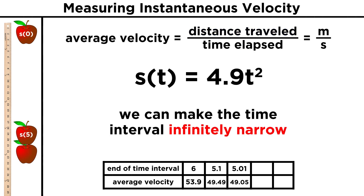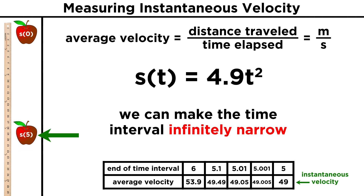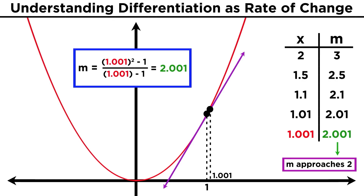If we were to continue in this manner, we would see the average velocity get closer and closer to forty-nine, so the instantaneous velocity of the apple precisely five seconds after being dropped must be 49 meters per second. This approach feels pretty similar to what we were doing with the tangent line. In fact, it's not just similar — it's exactly the same. In both cases, we are performing differentiation.